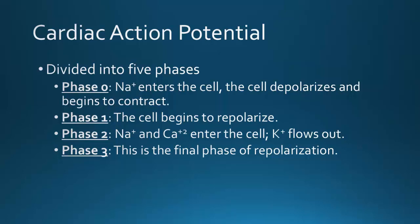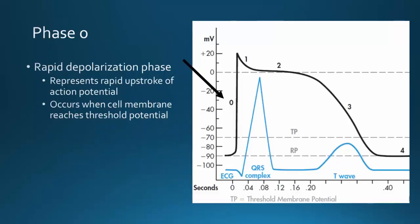Phase four is the actual resting phase. Looking at the graphics: during phase zero the charge is negative 90 at resting potential, then sodium rushes in very quickly, rapidly increasing the charge to around positive 20 to 30 — reaching depolarization. As positively charged ions flow into the cell, the inside becomes positively charged compared with the outside, leading to muscular contraction. Phase zero is really the contraction phase.